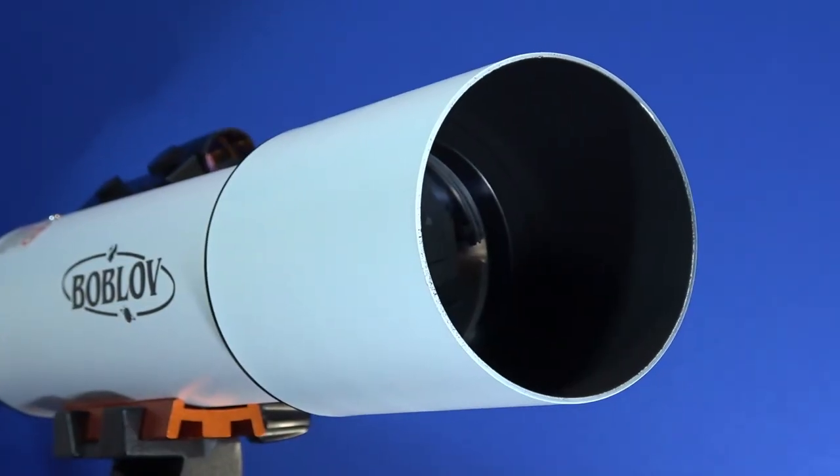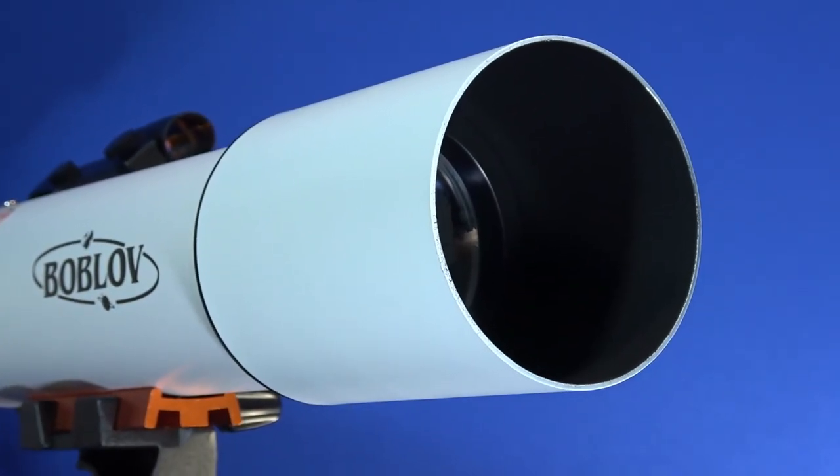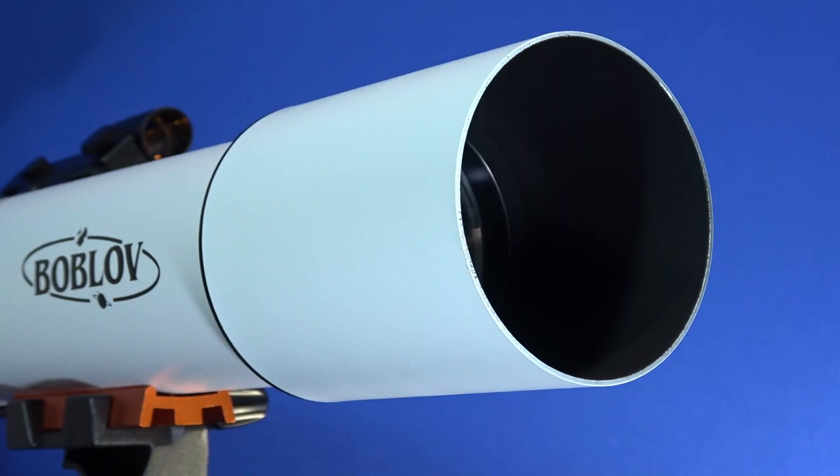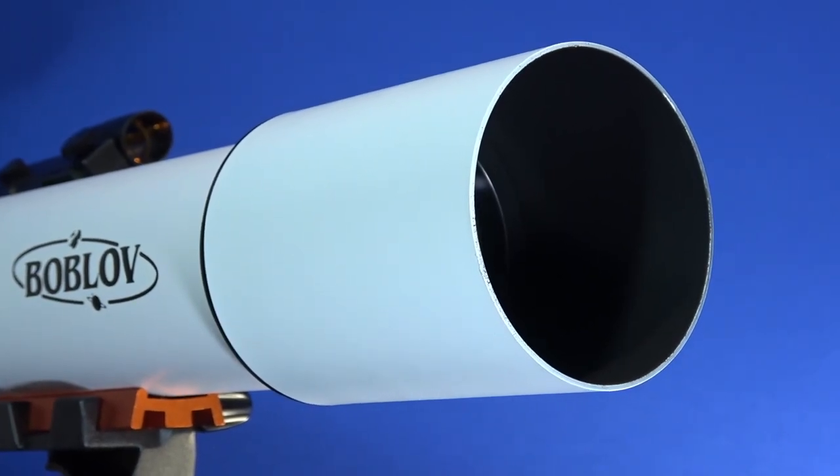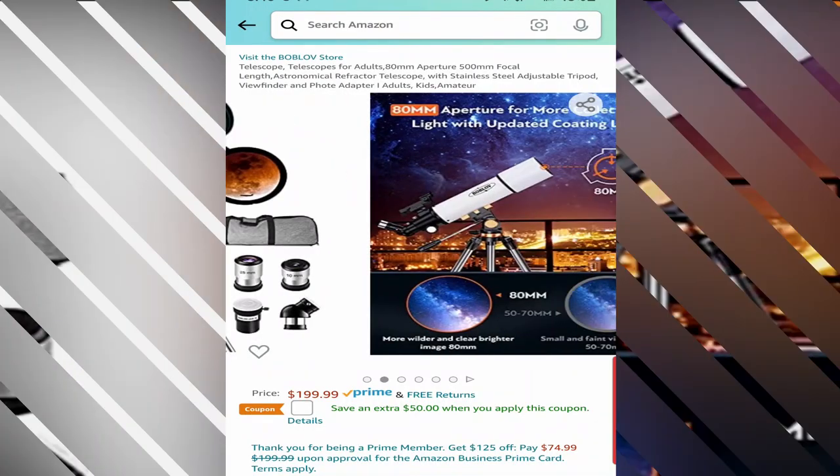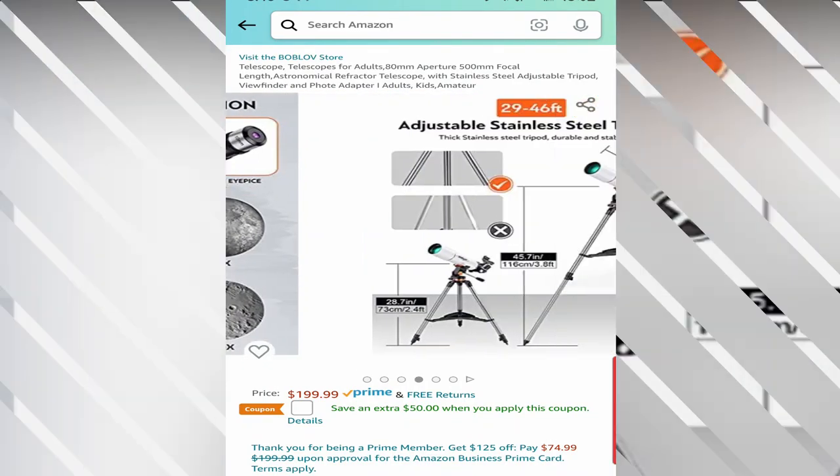Overall, the Bob Lob telescope is a beginner level scope for anyone that doesn't want to spend a ton of money on professional level scopes that can run you thousands of dollars. There are plenty of scopes to choose from in the same price range. If you think the Bob Lob telescope will be right for your level of interest, you can buy one on Amazon for just $199.99 right now.